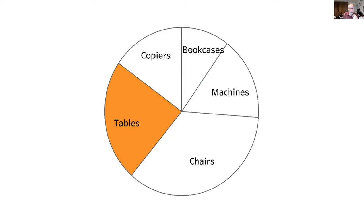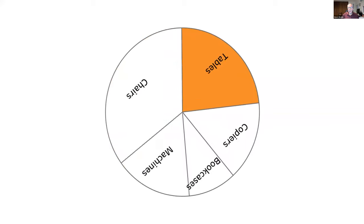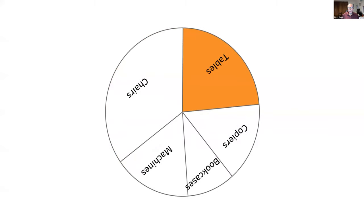Let's focus in just on tables. Can you tell how big a slice that is? Interestingly, if I change the orientation of this, it becomes an instant read. Maybe some of you are good at this — I don't know, maybe that's about one quarter, a little bigger or a little less? If I change the orientation — oh my god, instantly I can see that's a little less than one quarter.